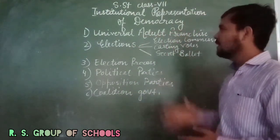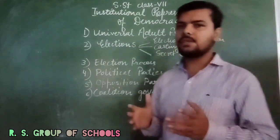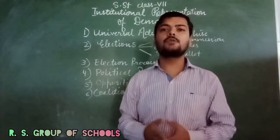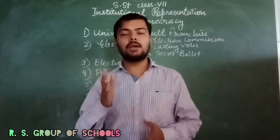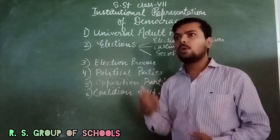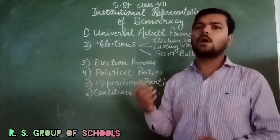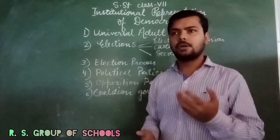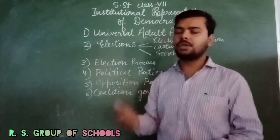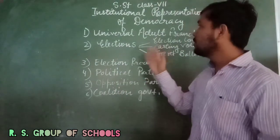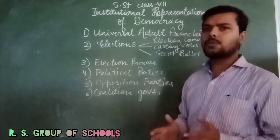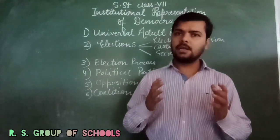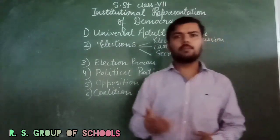First of all, Universal Adult Franchise. Universal Adult Franchise is the law or the rule which allows each and every citizen or native of a country to cast his or her vote without being discriminated on the basis of rank, gender, caste, creed, race, or religion. Universal Adult Franchise also granted law in such nations where males are dominant or there is discrimination over economic status.